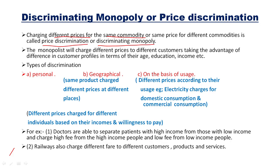The monopolist charges different prices to different customers, taking advantage of differences in customer profiles with respect to age, education, income, etc. The types of discrimination are based on personal aspects, geographical aspects, and on the basis of usage of the products or services. Starting with personal discrimination — different prices are charged for different individuals based on their incomes and willingness to pay.